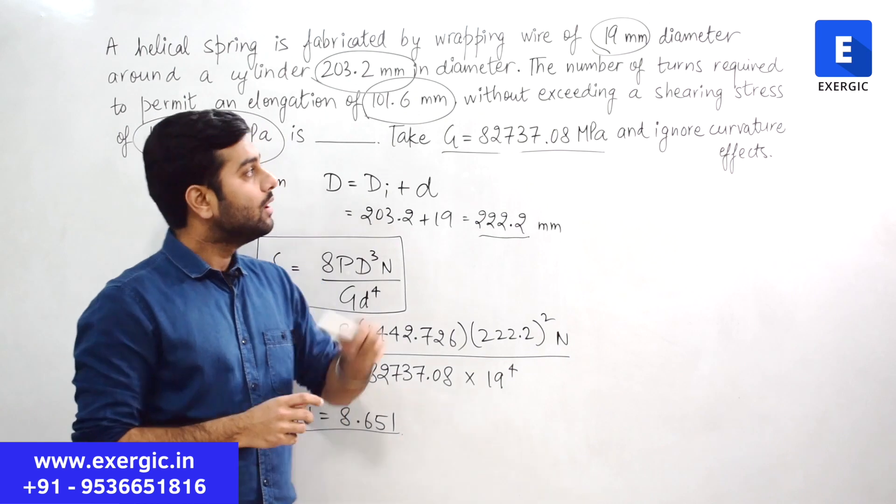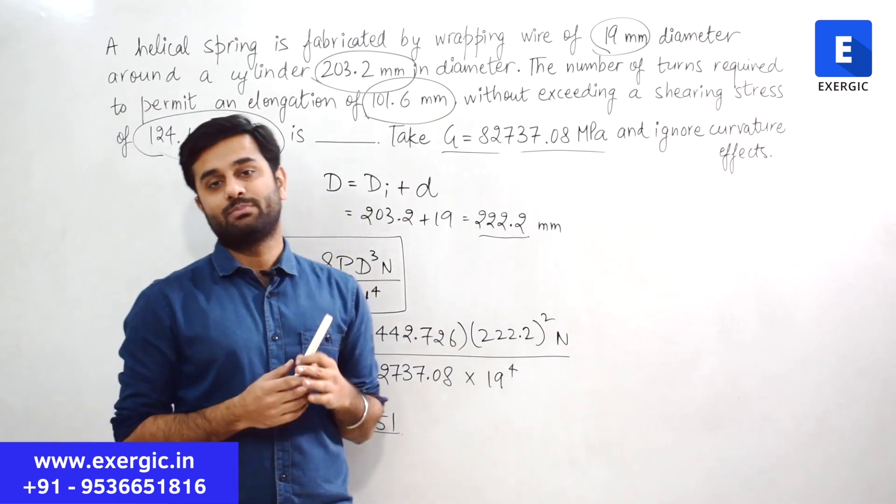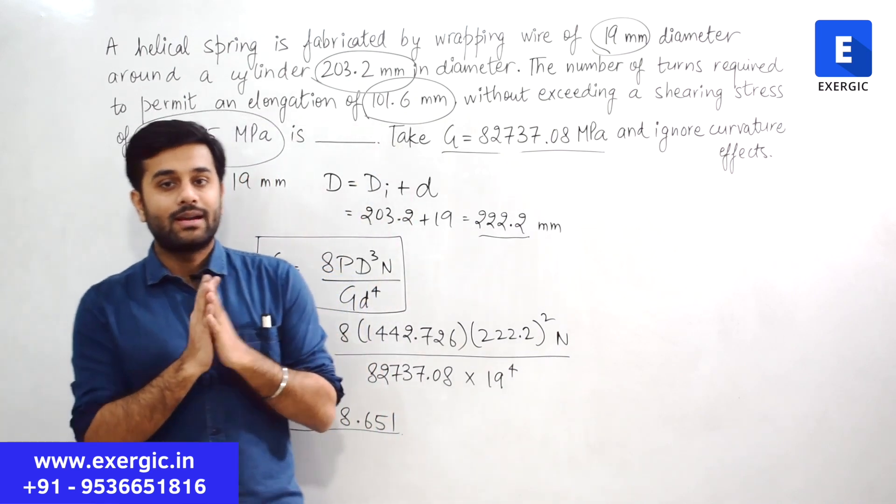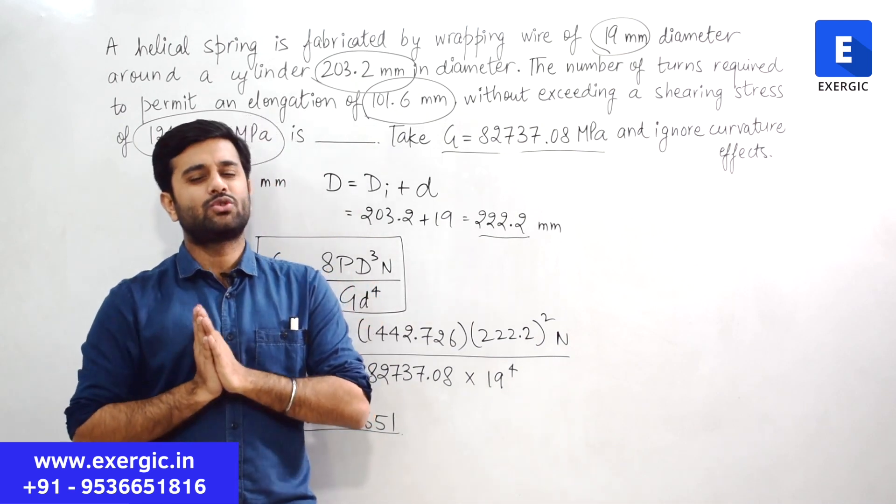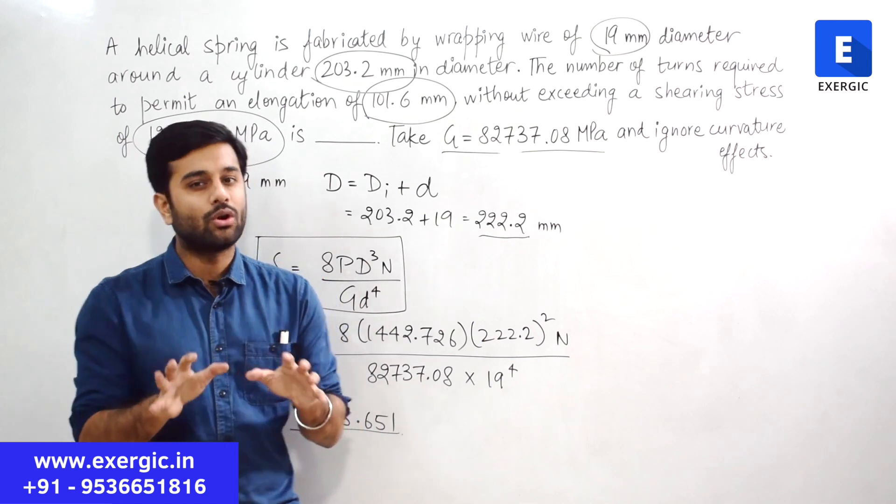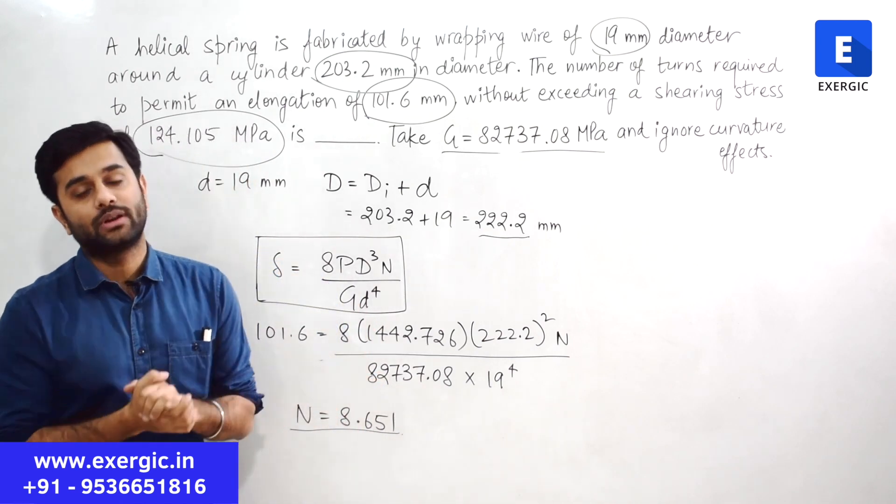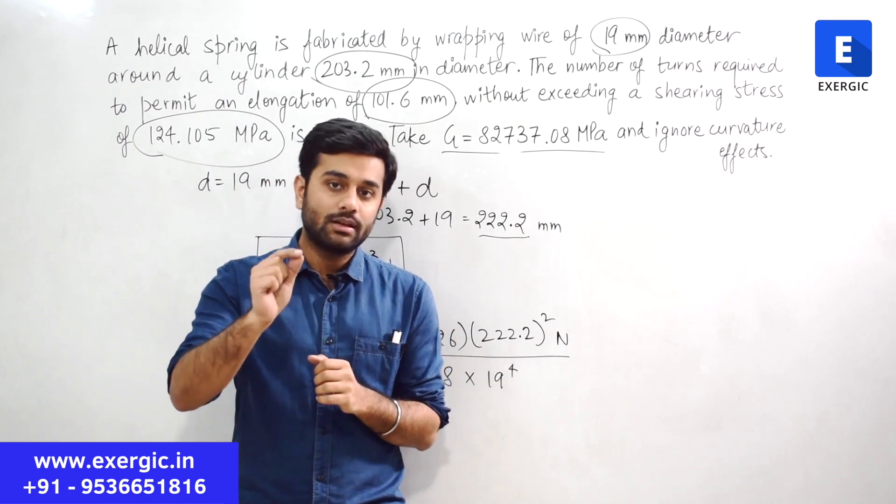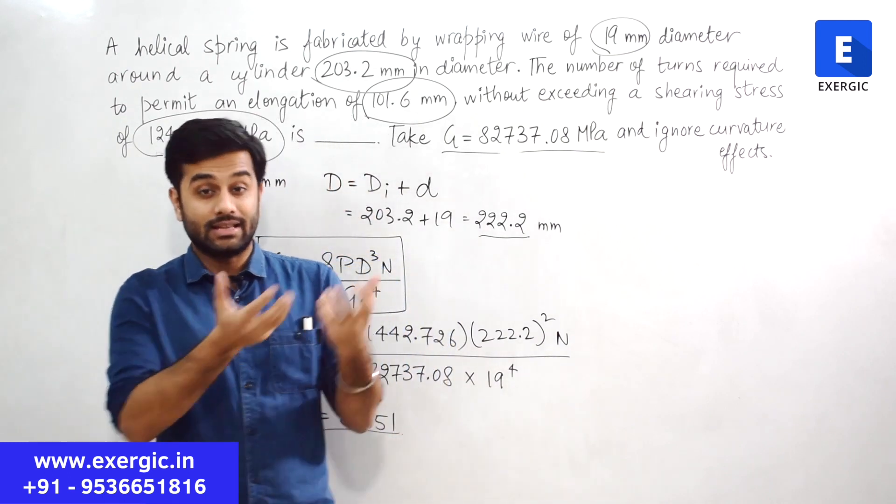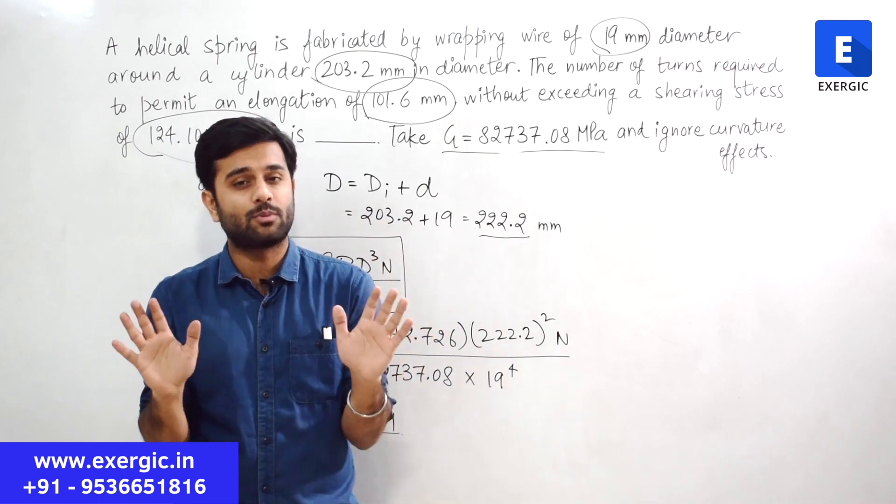Now, question is asking you number of turns of a spring. Number of turns of a spring. At first you will think that it should be an integer value. It should not be a decimal value. Right? Let me tell you, number of turns of a spring can also be in decimal because it is specifically in this question. It is very much possible.